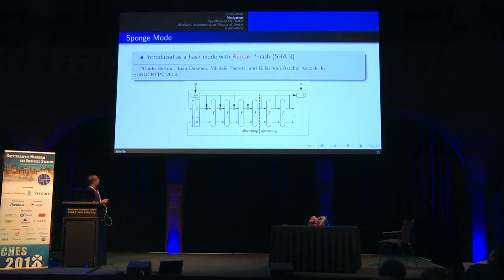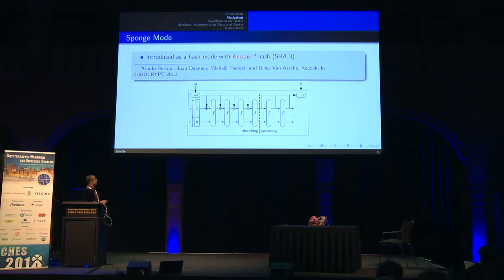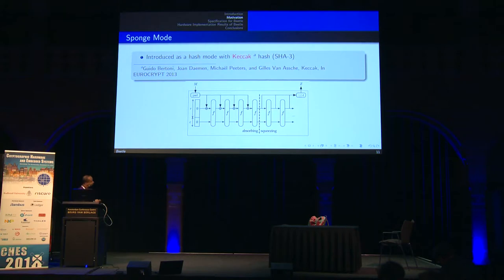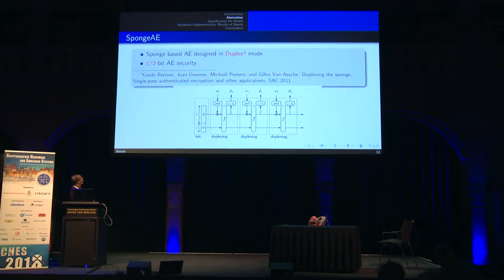The name 'sponge' comes from the fact that, like a sponge, it has two phases: an absorbing phase and a squeezing phase. In the absorbing phase, it absorbs message blocks — just as a sponge absorbs water. In the squeezing phase, it outputs the hash digest. Later, the designers of Keccak also designed a sponge-based AE scheme called SpongeAE, which works in duplex mode.